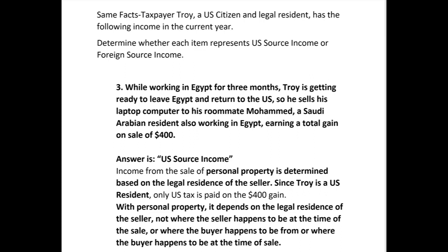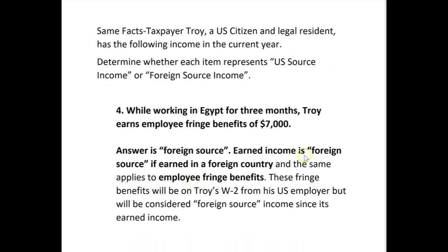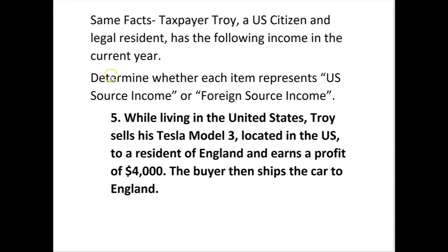Number four: same facts — Troy is a US citizen and legal resident. While working in Egypt for three months, Troy earns employee fringe benefits of $7,000. Employee fringe benefits are like wages — that's earned income. Earned income is foreign source if earned in a foreign country. So employee fringe benefits earned while working in Egypt are foreign source income. W-2 income and employee benefits are earned income, and earned income is foreign source if earned in a foreign country. The answer to number four is foreign source.